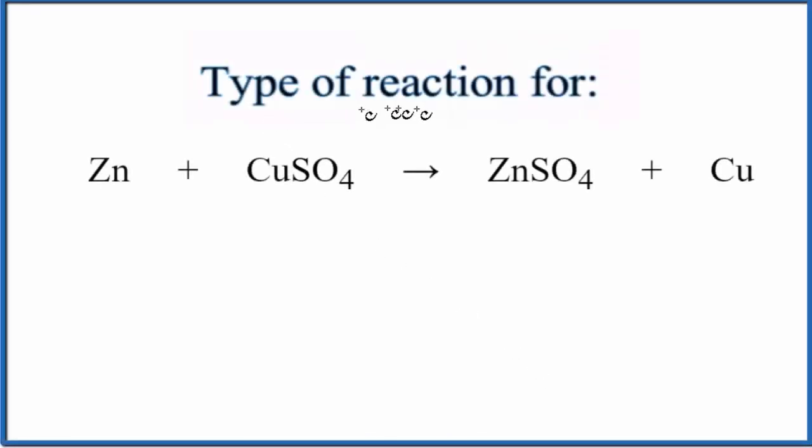In this video, we'll take a look at the type of reaction for Zn plus CuSO4, zinc plus copper sulfate. When I look at this equation here, I see I've got a metal all by itself here, and then a different metal all by itself over here. That's making me think this will be a single displacement or single replacement reaction.